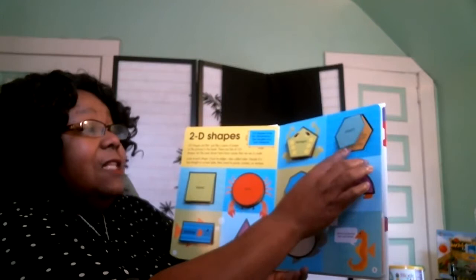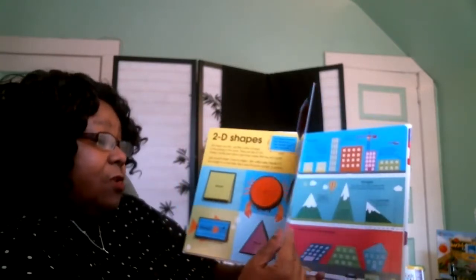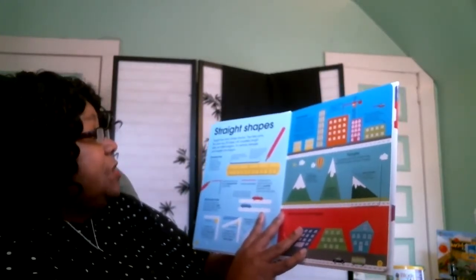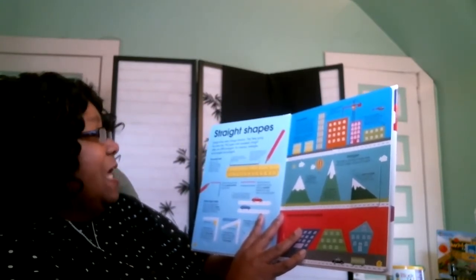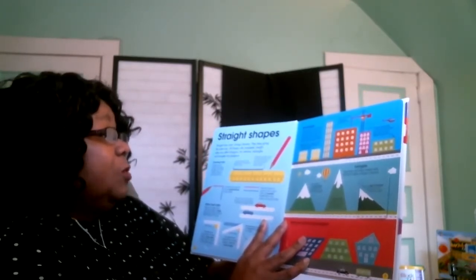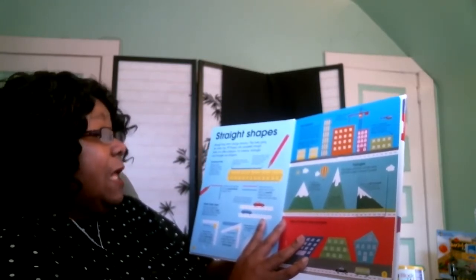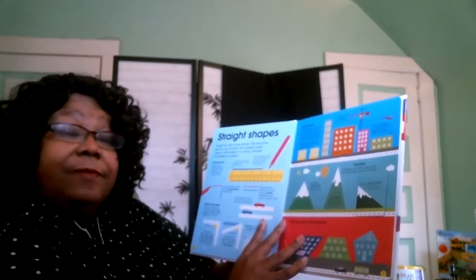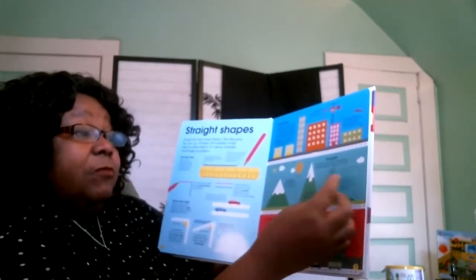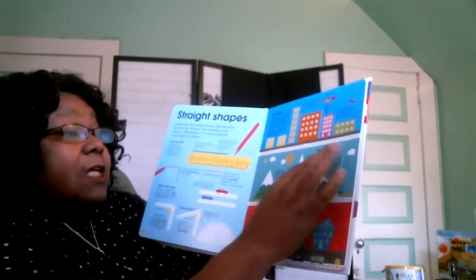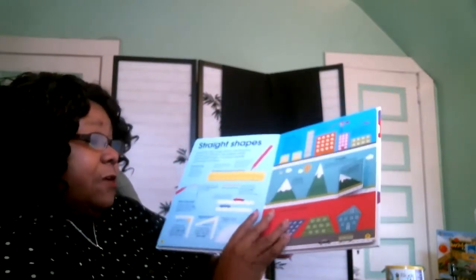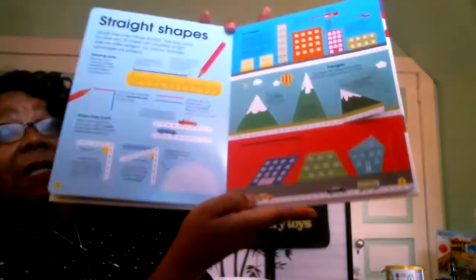Straight lines never change direction — they keep going the same way. All shapes with completely straight sides are called polygons. For instance, rectangles and triangles are polygons. There are more details here with flaps, including more triangles, rectangles, and additional polygons.